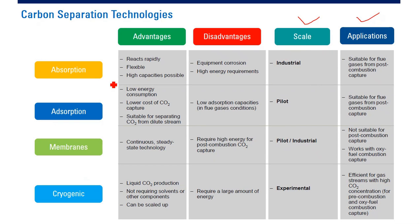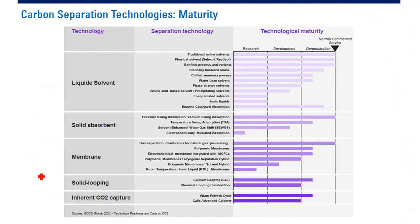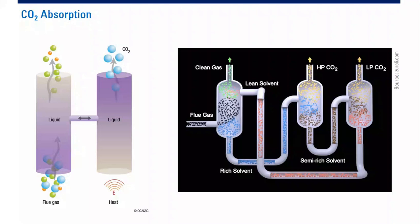The four biggest categories are absorption technology, adsorption technology, membrane, and cryogenic. This will not be tested because this section is specifically for chemical engineers. Looking at maturity levels — liquid solvent, solid absorbent, membrane, solid looping — some of them are at industrial scale but many are still at research or laboratory scale.